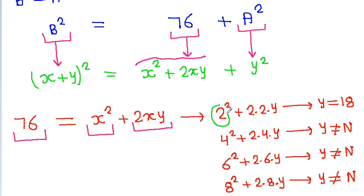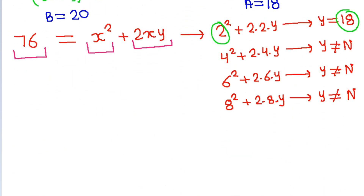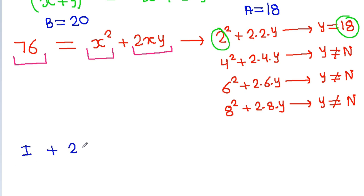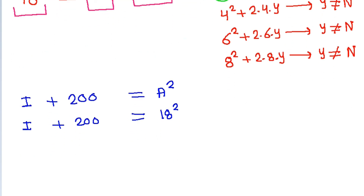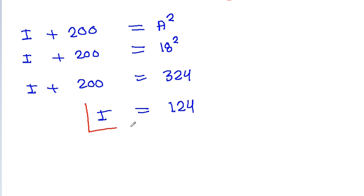With x = 2 and y = 18, we get b = x + y = 2 + 18 = 20, and a = y = 18. Substituting into equation 1: i + 200 = a² = 18² = 324, so i = 324 − 200 = 124. The value of i is 124.